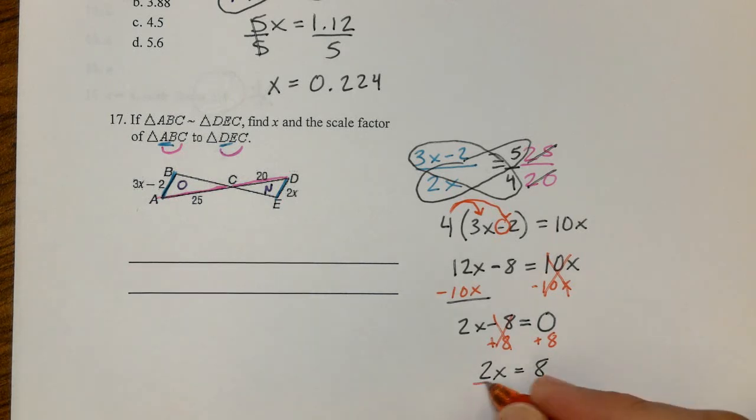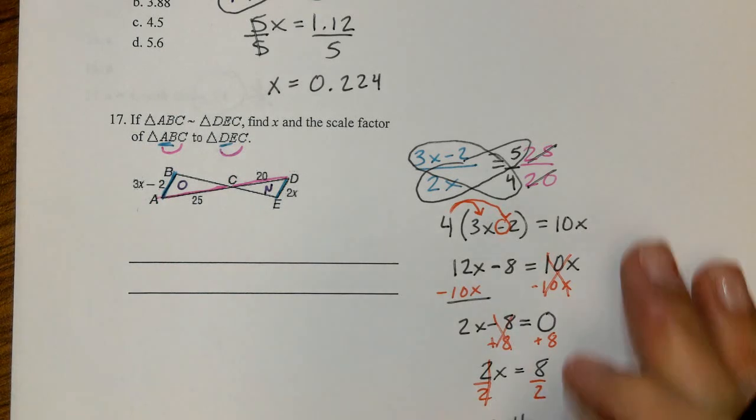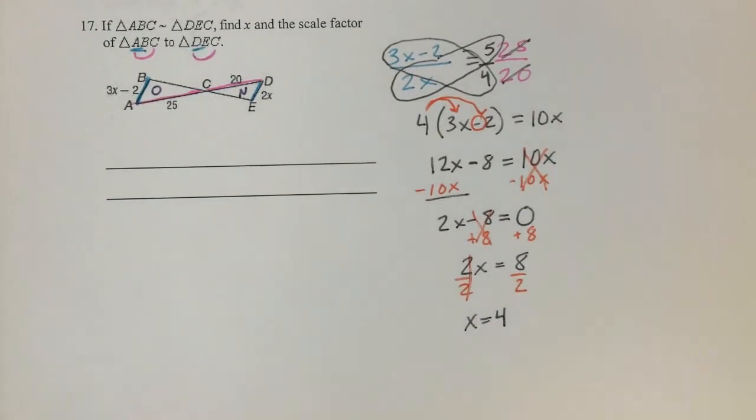And then that's going to make it a little bit prettier for us because we will have 2X equals 8. Finally, dividing by that 2, now that we have an equal sign, the variable on one, the constant on the other, X is going to equal 4. So there is part of the problem. Now we need to find the scale factor.